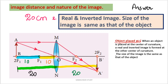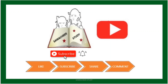The image is real and inverted, and the size of the image is the same as the object. When the object is placed exactly at 2f, the image forms at 2f on the other side — real, inverted, and same size as the object. This is your answer. Hope you understand this problem. If you like this video, please subscribe and share it with your friends. Thank you so much for watching.